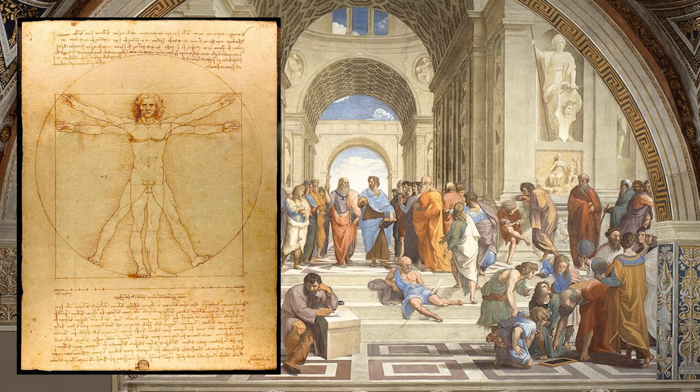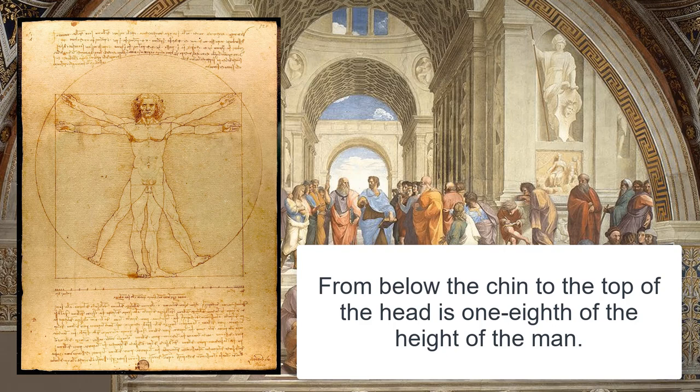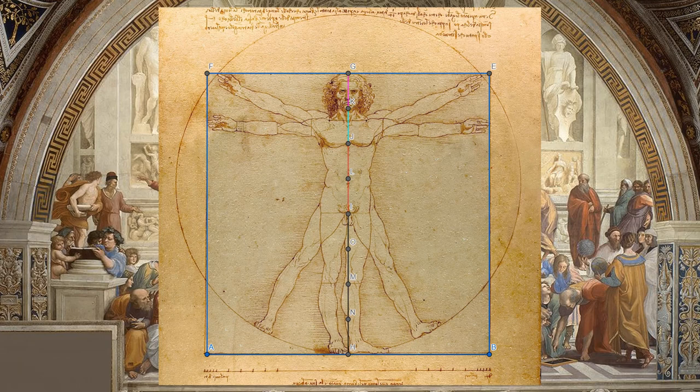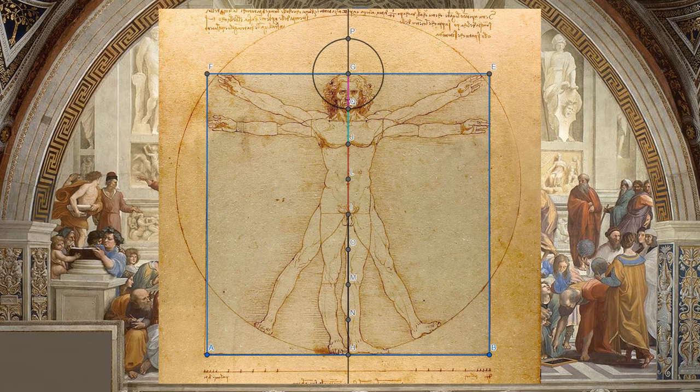Da Vinci tells us in text under the Vitruvian Man that from below the chin to the top of the head is one eighth the height of the man. The Vitruvian Man can easily be divided into eight sections vertically, each section being the length from below the chin to the top of the head.